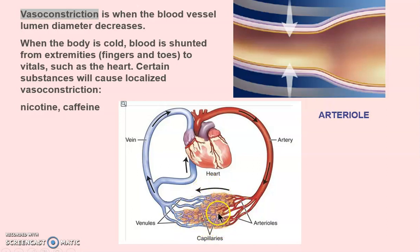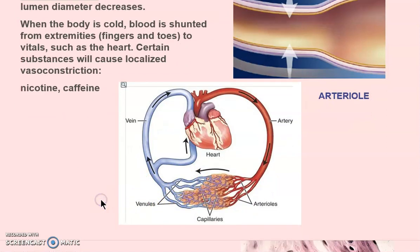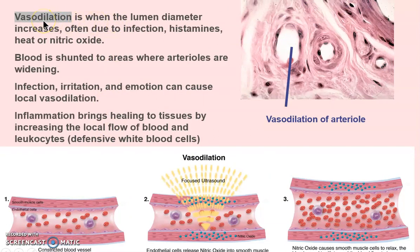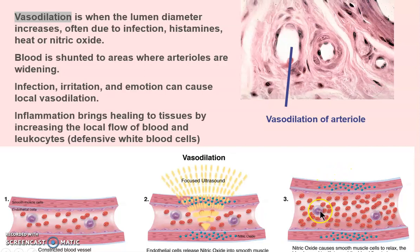At the capillary bed we exchange nutrients and oxygen, then move to venules and back to the vein and heart. If you blush, the arterioles expand. Vasodilation is when the lumen expands — caused by histamines, heat, or infection. This is why we get stuffy during a nasal infection: increased blood flow destroys the invader. Try not to suppress symptoms with cold medicines — being stuffed up means your body is fighting the infection.